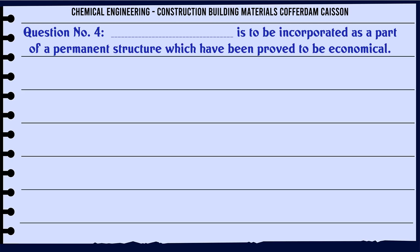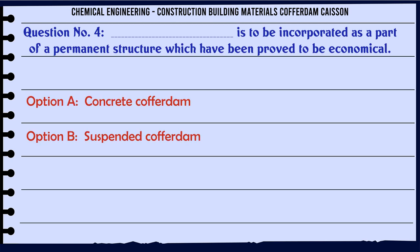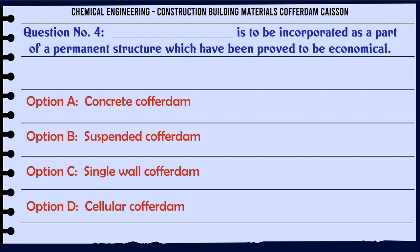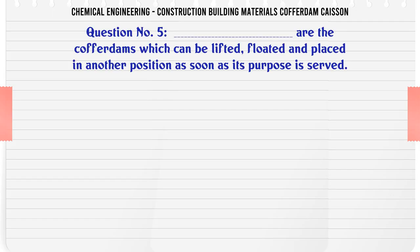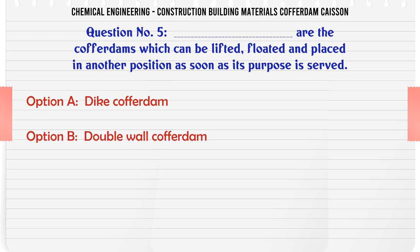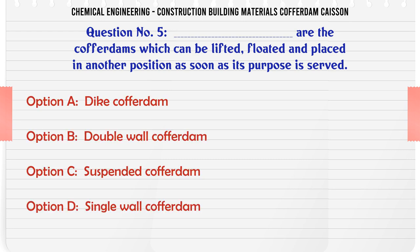Which type of cofferdam is to be incorporated as a part of a permanent structure and has proved to be economical? A. Concrete cofferdam. B. Suspended cofferdam. C. Single wall cofferdam. D. Cellular cofferdam. The correct answer is: Concrete cofferdam.